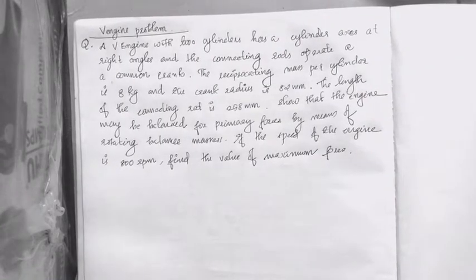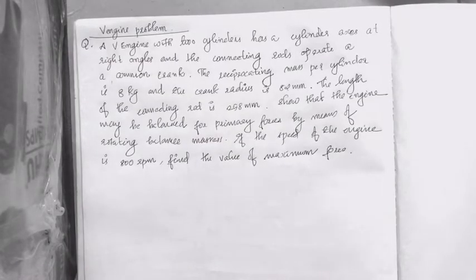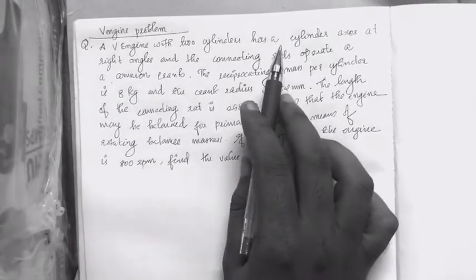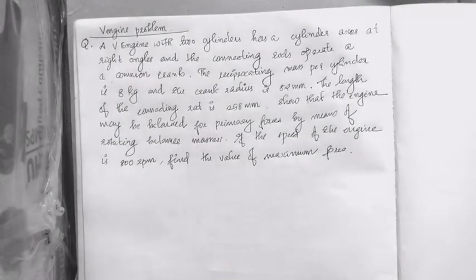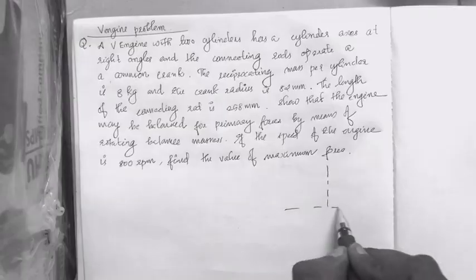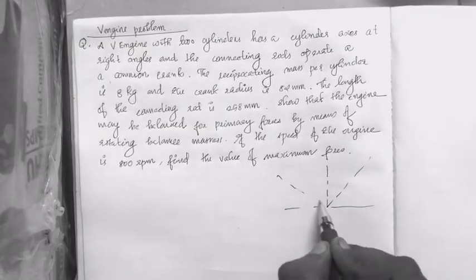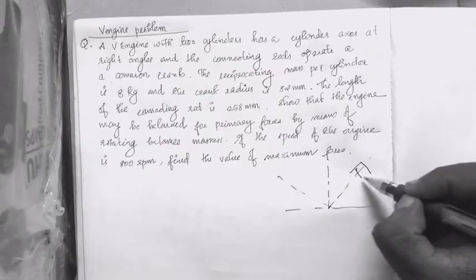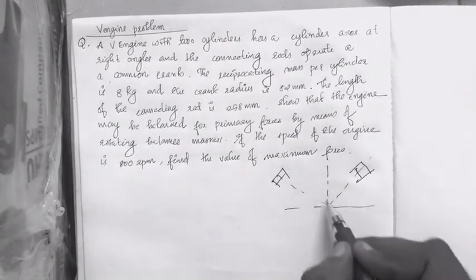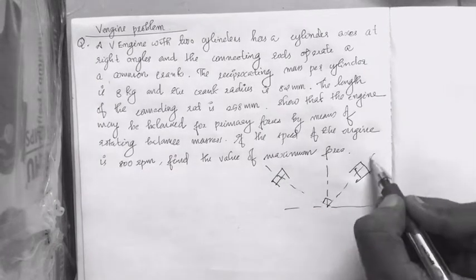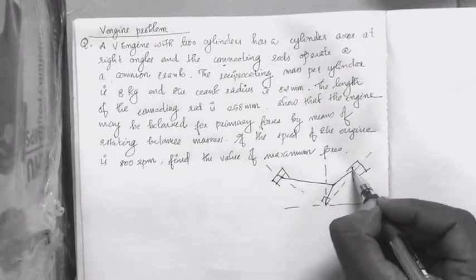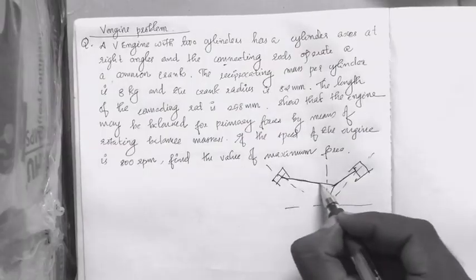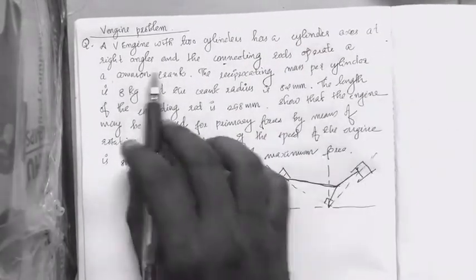This is a typical simple V-engine problem. We have to discuss three problems. The first problem is to analyze a V-engine with two cylinders. The two cylinders have axes at right angles to each other. Now we have to do the construction and the V-engine line of action, with two cranks.